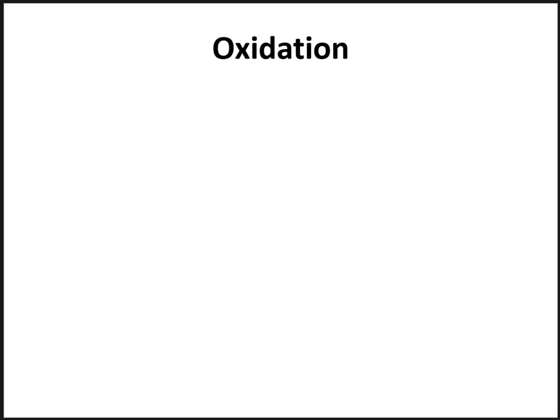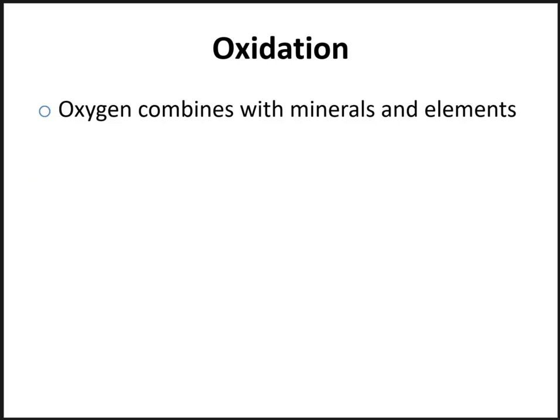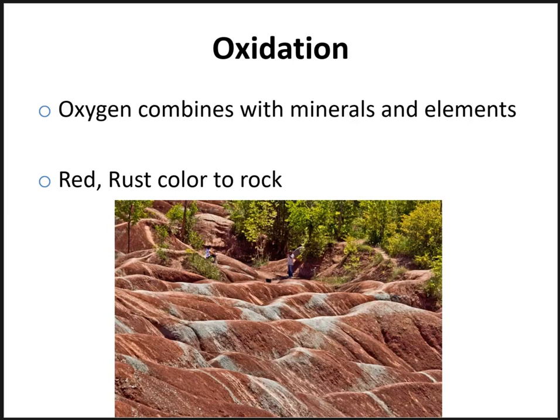In oxidization, oxygen combines with minerals and elements in the rock and forms a new product that is a red rust color. The iron in the rock reacts with oxygen to produce iron oxide, which causes this red rust color. Here is an image from the Badlands in Ontario — an iron-rich rock that has produced iron oxide in this magnificent red rust color. This is oxidization occurring in these rocks.